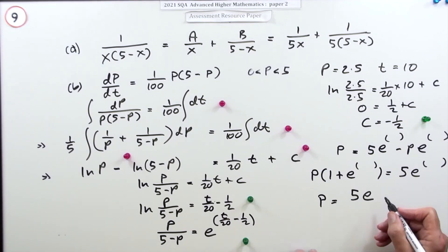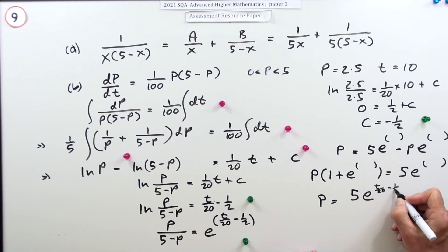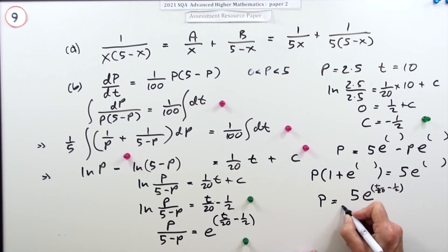Will be five e of that thing. So finally P will be 5e of that thing, which was t upon 20 minus a half, divided by 1 plus e of that thing, t upon 20 minus a half.